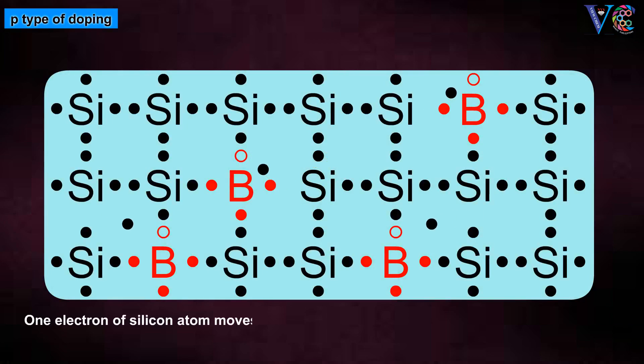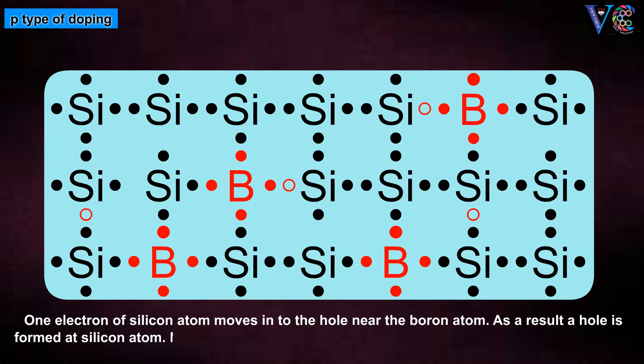One electron of silicon atom moves into the hole near the boron atom. As a result, a hole is formed at silicon atom. Now another electron from adjacent silicon atom moves into this hole. The process continues.